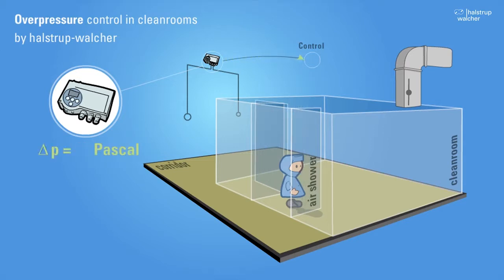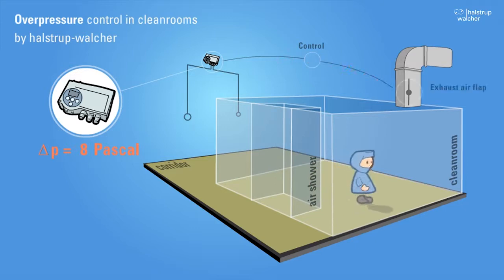If the room pressure falls from its normal level of 15 Pascal to a level below a threshold value, the control system responds by closing the exhaust air flap.